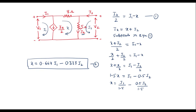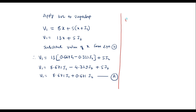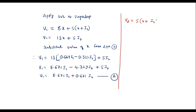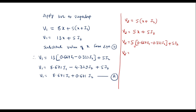Now I will apply KVL to the second loop. V2 equals the voltage across the 5 ohm resistor, that is 5(X + I2), which gives V2 = 5X + 5I2. Substituting X = 0.667 I1 minus 0.333 I2: V2 = 5(0.667 I1) minus 1.667 I2 + 5I2, giving V2 = 3.33 I1 + 3.33 I2. Let me call this equation B.